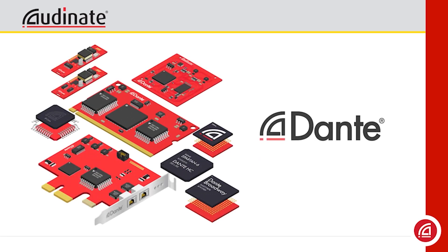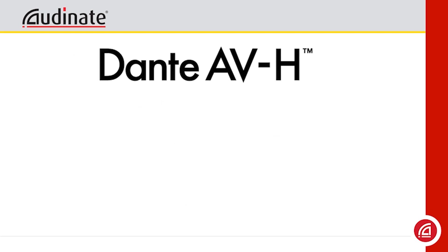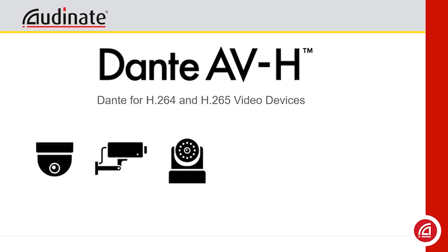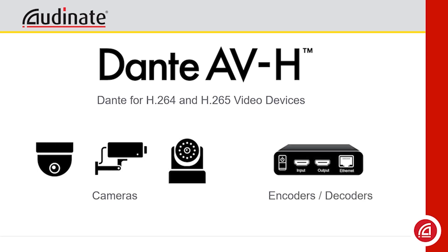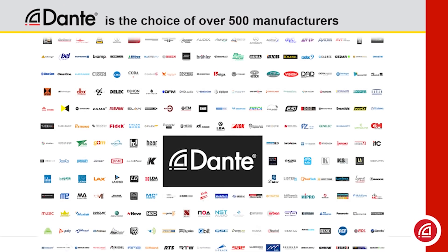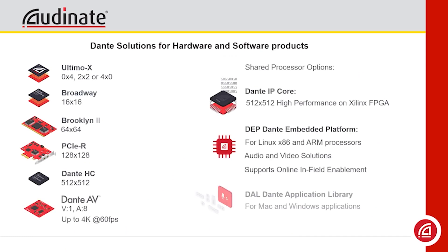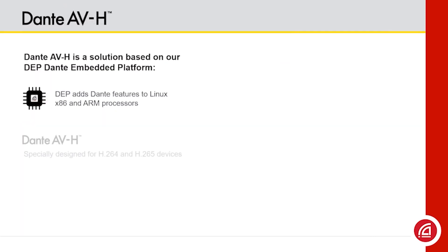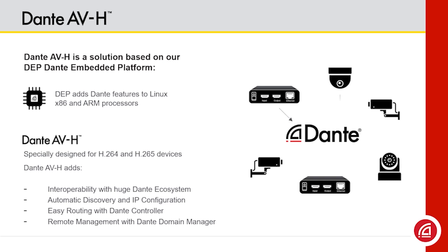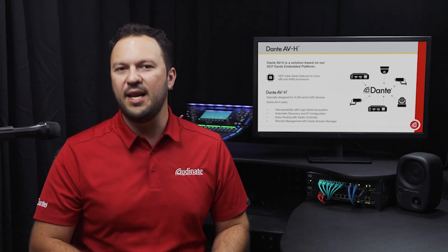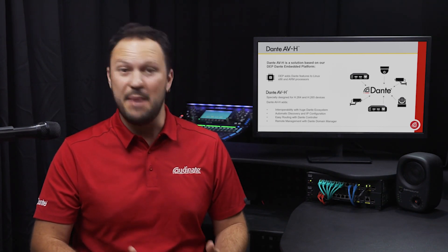Audinate works directly with manufacturers, helping them bring new products to life. Video OEMs can now benefit from their network expertise and turn their H.264 and H.265 products into Dante endpoints with Dante AVH. As the de facto standard in the Pro-AV industry, Dante has been adopted by hundreds of manufacturers currently selling thousands of 100% interoperable products. Dante AVH is powered by Audinate's Dante Embedded Platform, transforming devices into Dante AV endpoints without the need for new hardware designs. Dante AVH products benefit from automatic network discovery and IP addressing, one-click routing with Dante Controller, and remote management with Dante Domain Manager.